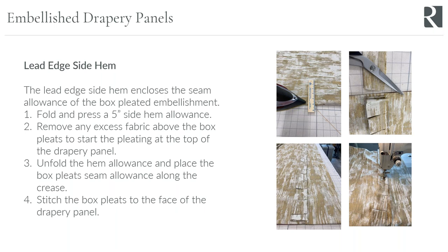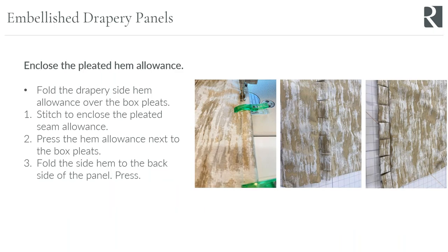Then I enclose the pleated trim inside that five-inch hem allowance by folding the hem allowance back over the pleated trim, stitching from top to bottom, then pressing. I press the hem allowance, fold it back up underneath the panel, and press the face side — pulling on the pleat slightly to get a nice crisp pressed line between the pleated trim and the panel.